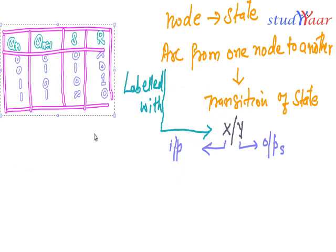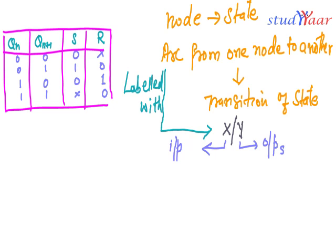My state diagram is going to have nodes which is going to indicate states. There are only two possible states, 0 and 1. So I'm going to have a 0 over here, this is my one state, and 1 over here, this is my another state.